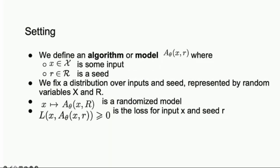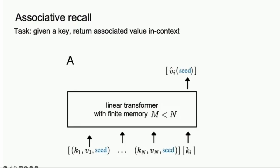A little bit more about the settings. We consider an algorithm which is a parameterized model A_θ that takes x the input and also gets some random seed r. We fix a distribution over the input and over the seeds, represented by random variables X and R. Now we have our randomized model which maps x to A_θ(x, R) where R is a random variable, so the output itself is a random variable given the input. We also fix some loss L(x, A_θ(x, r)) which is positive.